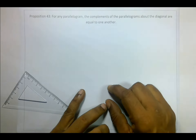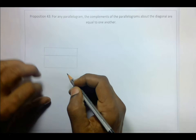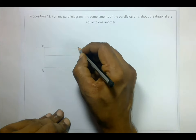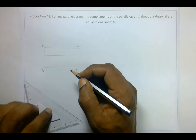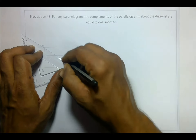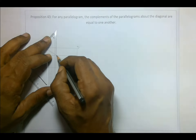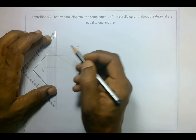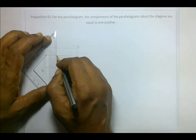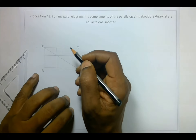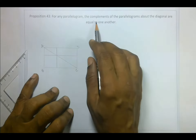Proposition 43: For any parallelogram, the complements of the parallelograms about the diagonal are equal to one another. Let's say this is parallelogram ABCD. Now let's draw a diagonal, and let's draw a parallel line parallel to CD at this intersection. These two regions are called the complements.